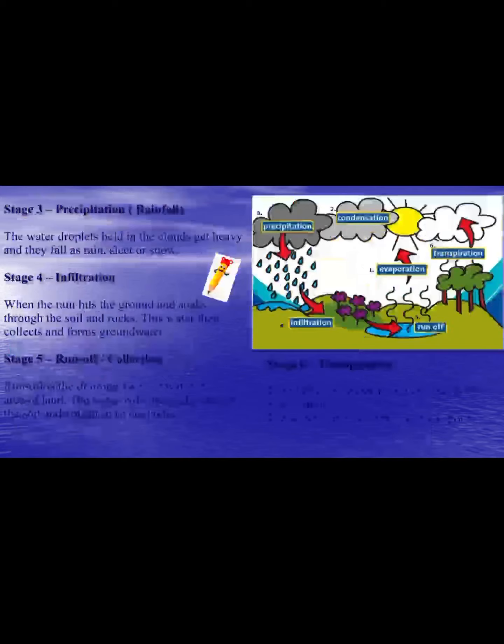Precipitation means rainfall — water is held in the clouds and once they're full they release the water as rain, sleet, snow, or hail. Infiltration is when the water hits the ground and soaks down through the rocks, collecting in the ground to form groundwater. Runoff is the draining away of water from areas of land, eventually ending up in rivers, lakes, and oceans.